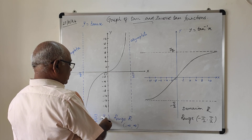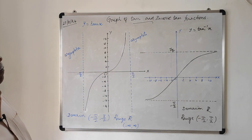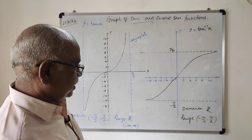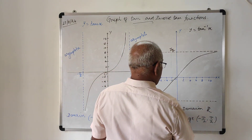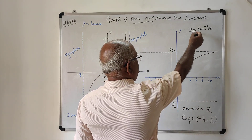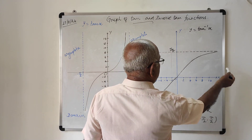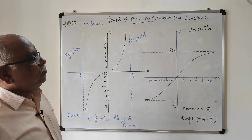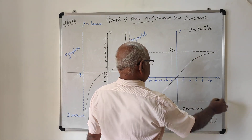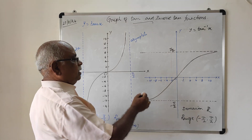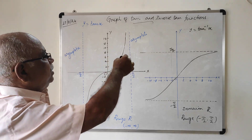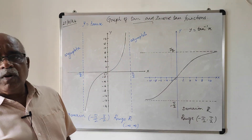The domain of the tan function is -π/2 to +π/2 and the range is the real numbers. For the inverse tangent function, the asymptotic lines are y = -π/2 and y = π/2. The domain of the inverse tangent is all real numbers, minus infinity to plus infinity along the x-axis, and the range is -π/2 to π/2. Using these two graphs, we are going to define the tan function and inverse functions and solve some problems.